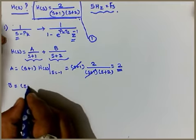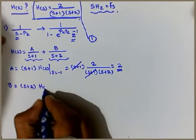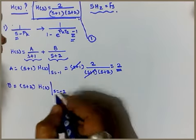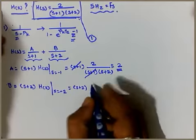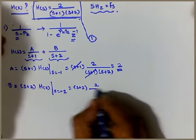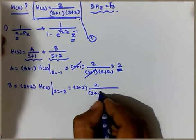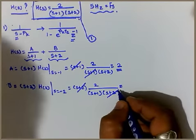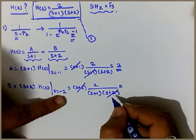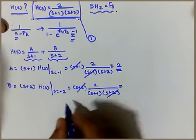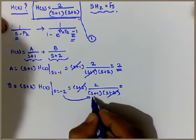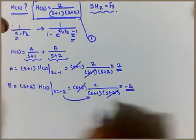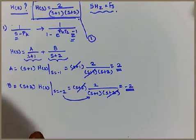For B, we compute (s+2)·H(s) at s = −2. So (s+2) · [2/((s+1)(s+2))] = 2/(s+1). At s = −2, this gives 2/(−2+1) = 2/(−1) = −2. So B = −2.